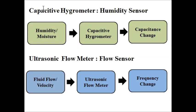Next is the capacitive hygrometer — it is a humidity or moisture sensor. It senses moisture or humidity change and converts it into a change in capacitance, which again requires a signal conditioning circuit to convert it into a change in voltage. Then we have the ultrasonic flow meter — as the name suggests, it detects fluid flow or velocity. It converts fluid flow or velocity into a change in frequency, operating on the Doppler shift phenomenon, which we will discuss in detail in upcoming videos.